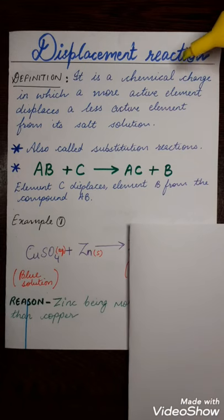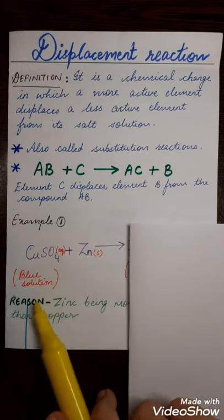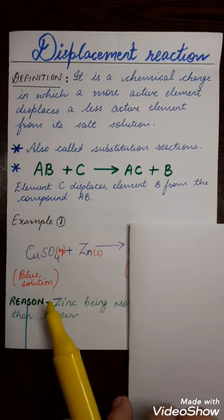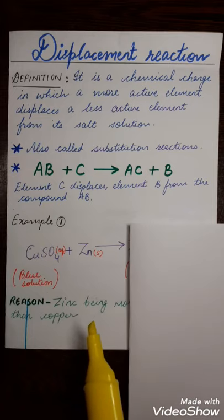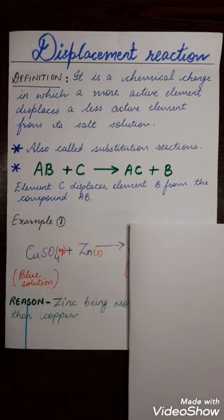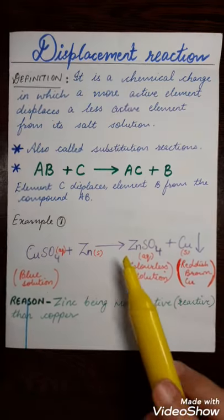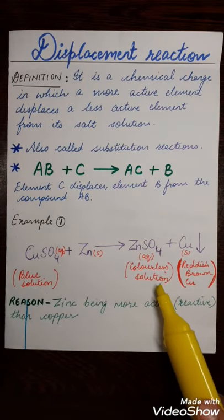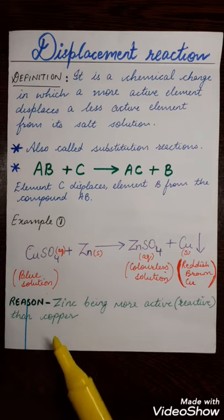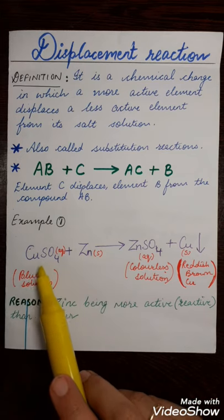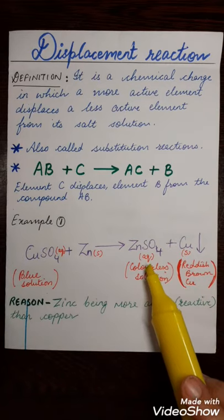Now let's do the chemical equations based on displacement reaction. The first: the solution of copper sulfate is there and a few pieces of zinc are added to the copper sulfate solution. Copper sulfate is a blue colored solution. The blue color of the solution gradually fades and soon the solution becomes colorless. At the same time, reddish brown particles settle down in the beaker. Can you guess the products? The products are zinc sulfate and copper. Zinc sulfate is the aqueous solution, which is colorless, and copper as a residue which is reddish brown in color.